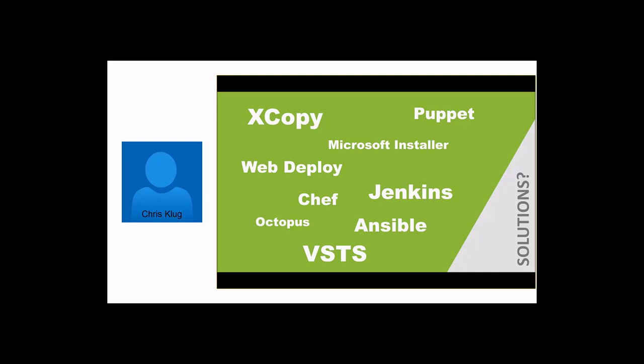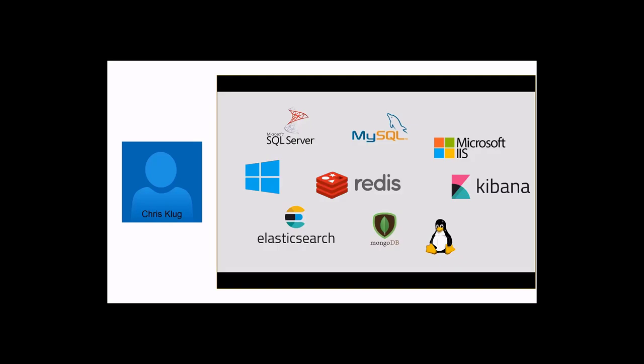Chef, Puppet, Ansible, and similar tools will make sure our environments have some of the same things installed, but we still have differences. We have all these different environments with small changes, and it would be ideal if we could deploy in exactly the same way to all of them. We're not just talking about different CPUs, RAM, drives, or IP addresses — we're also talking about all the services installed on top, like SQL Server, Redis, Kibana, and everything else our application needs to work.